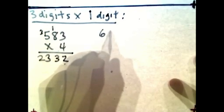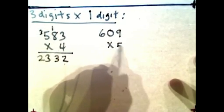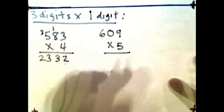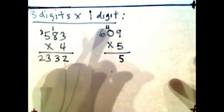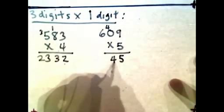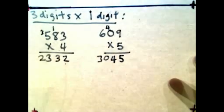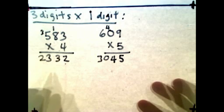Let's take another one. Let's say 609 times 5. 9 times 5 is 45. Carry the 4 here. 0 times 5 is 0 plus the 4 is 4. 6 times 5 is 30. So 3,045.